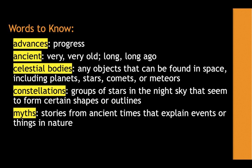Celestial bodies is any objects that can be found in space, including planets, stars, comets, or meteors. The sun, the moon, and other stars are examples of celestial bodies. Constellations is a group of stars in the night sky that seem to form certain shapes or outlines.